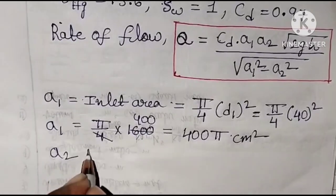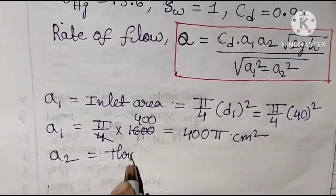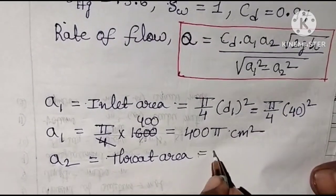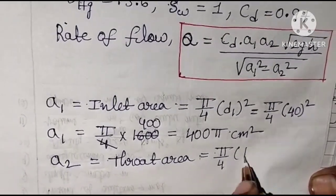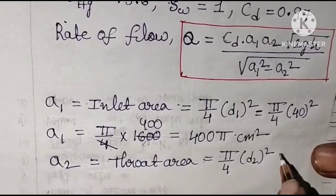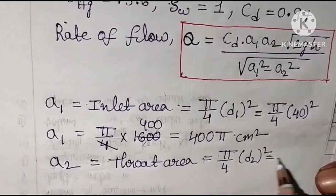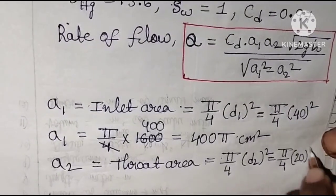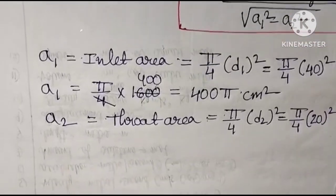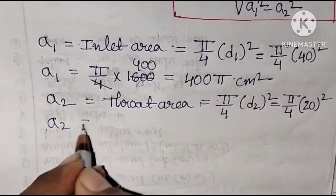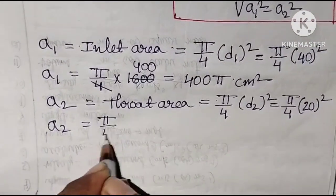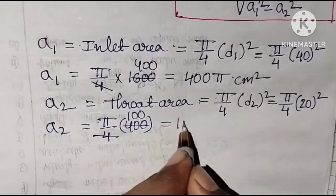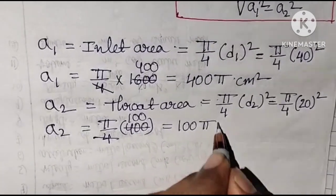A2 is the throat area, calculated as π/4 × D2². With D2 = 20 cm, A2 = π/4 × 20² = π/4 × 400 = 100π square centimeters.